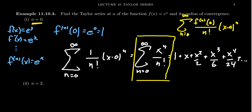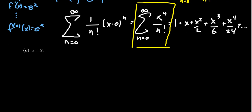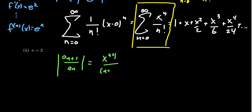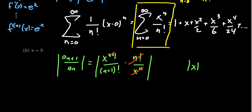Now, what is the radius of convergence — when will this series converge? To determine convergence, we'll use the ratio test, considering the ratio of consecutive terms a_{n+1} over a_n. Taking the terms, we get x to the n+1 over (n+1) factorial for the a_{n+1} term, times n factorial over x to the n. The x to the n cancels with all but one of the x's, giving us an absolute value of x. Then n factorial cancels with all but the (n+1) factor in (n+1) factorial.